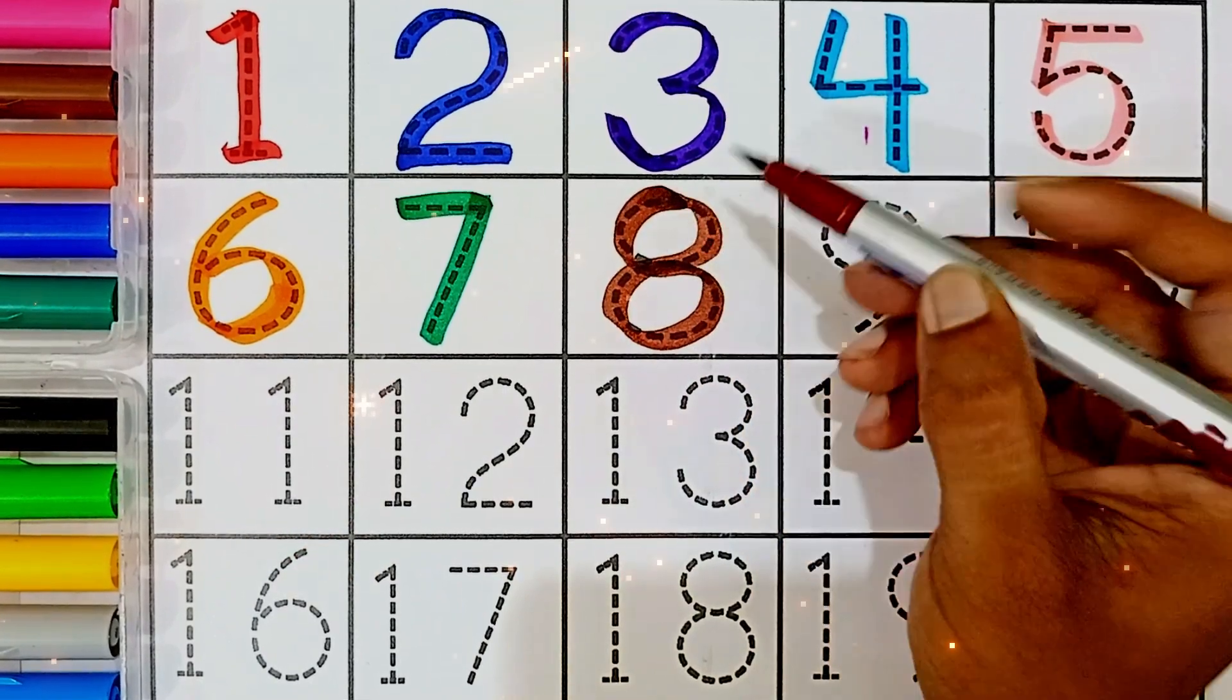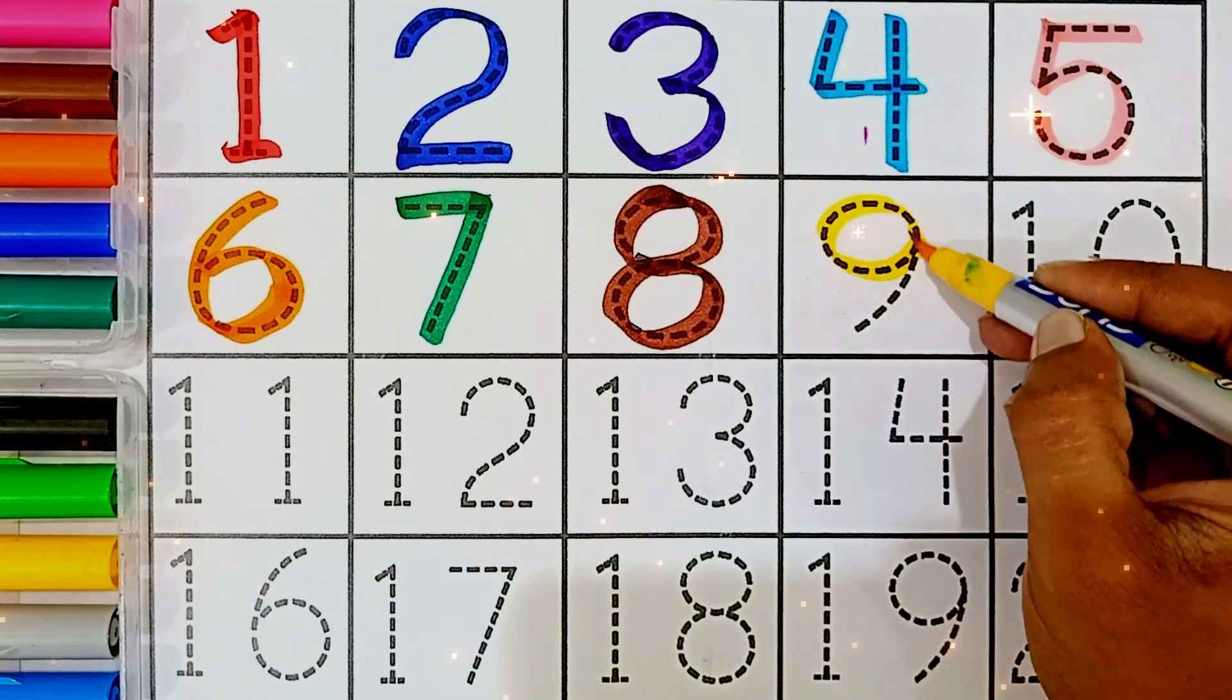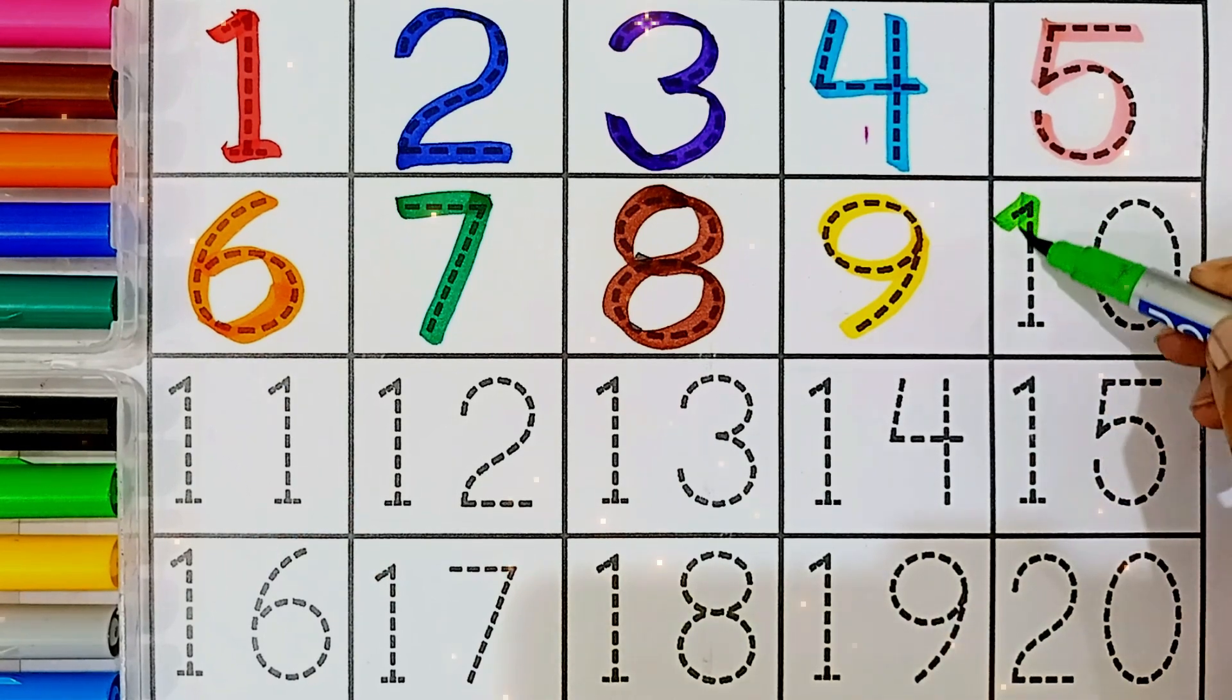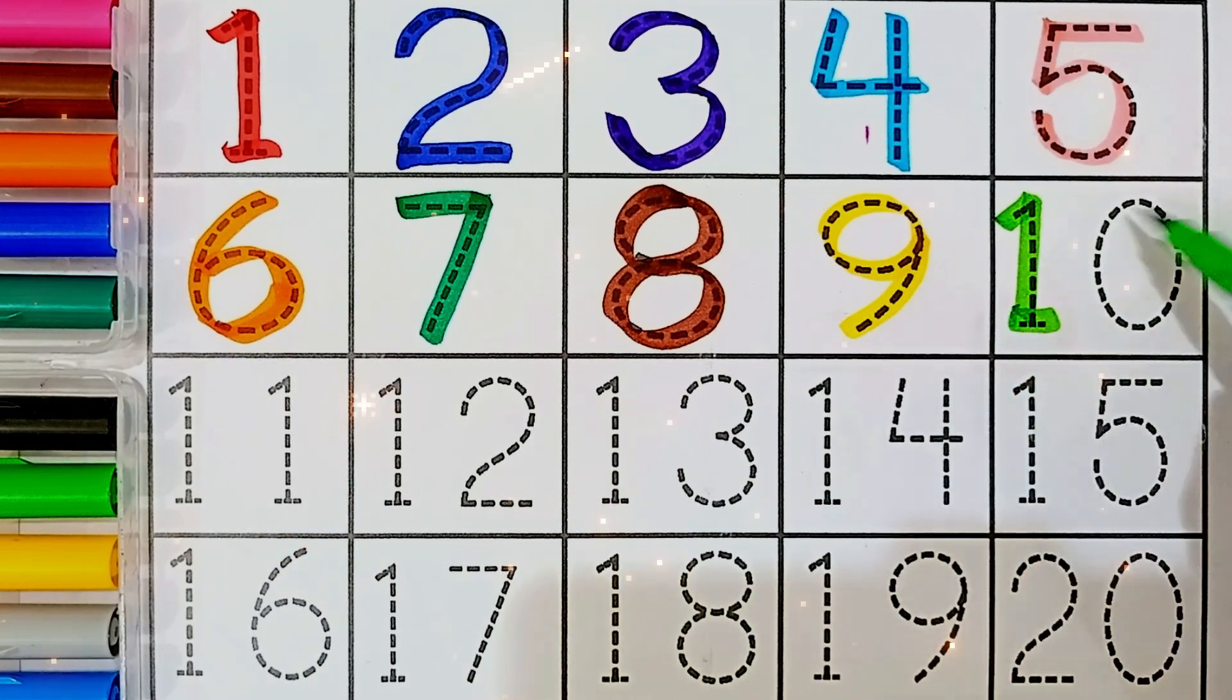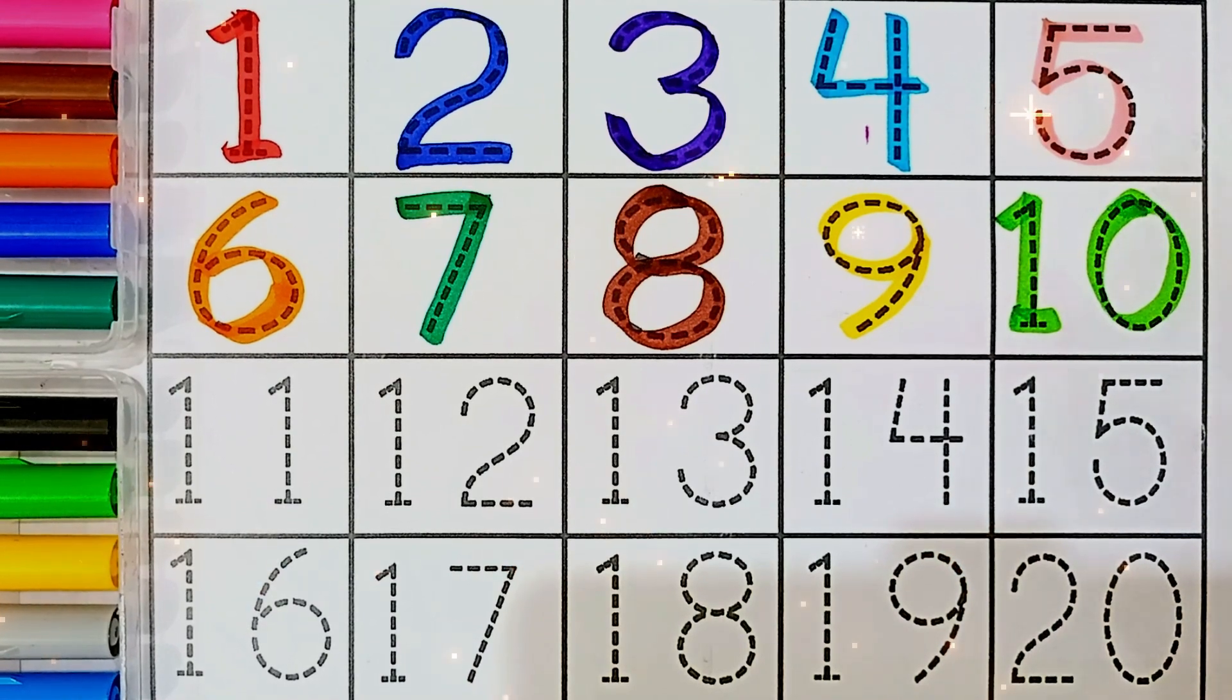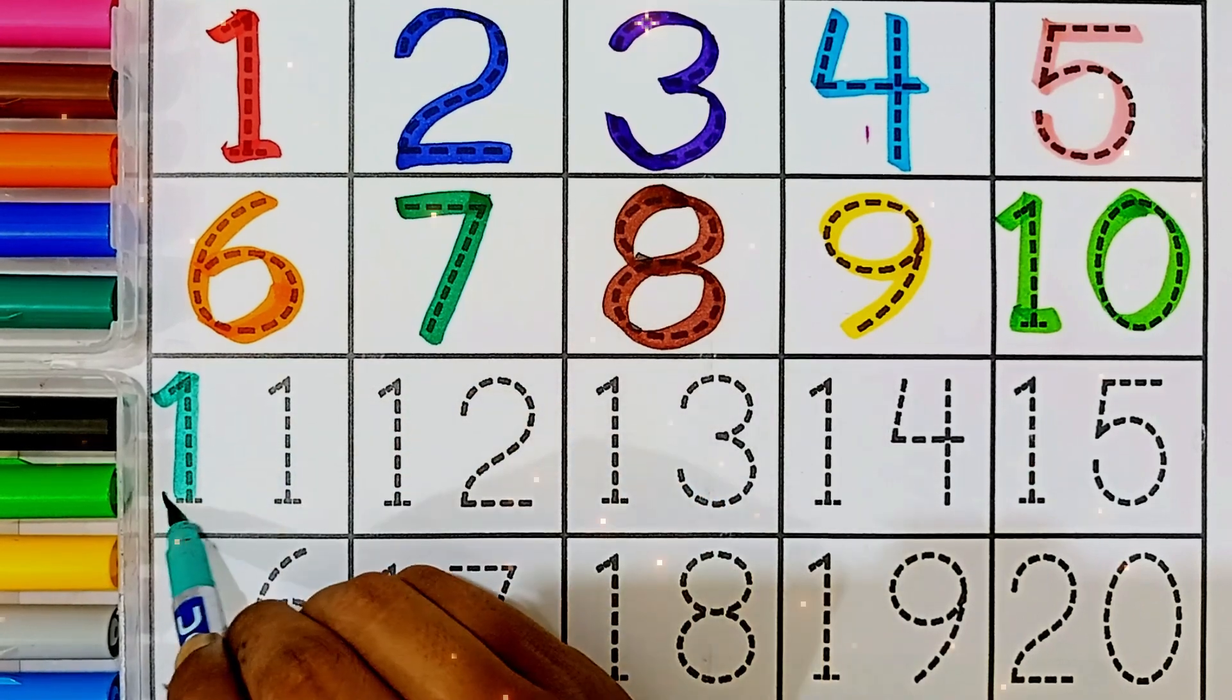Eight. Nine, yellow color. Nine. Ten, light green color. Ten. One, zero, ten. Eleven, sea green color. Eleven.